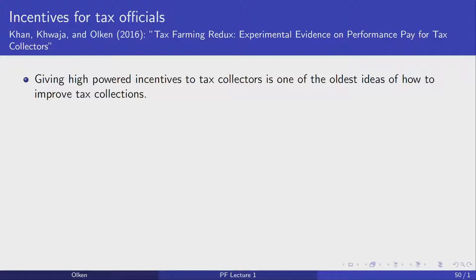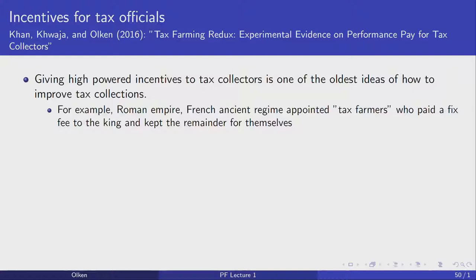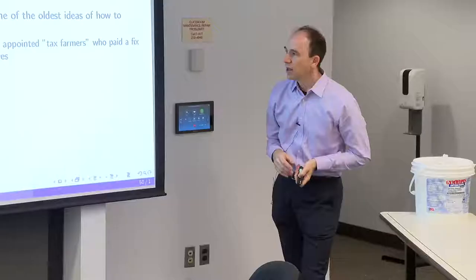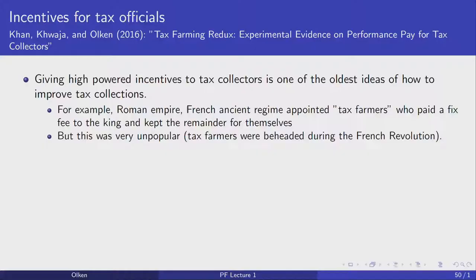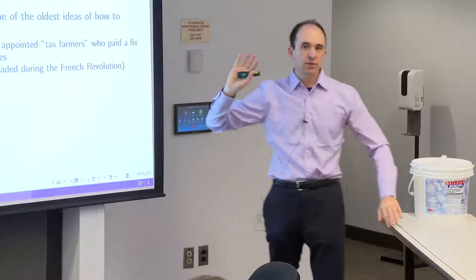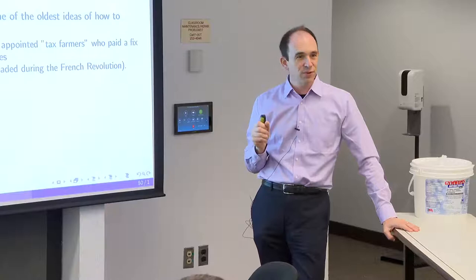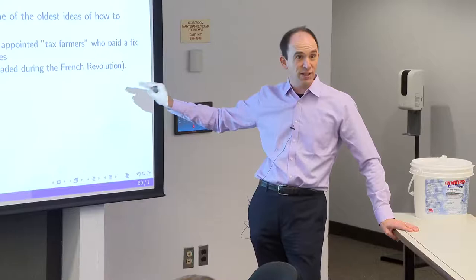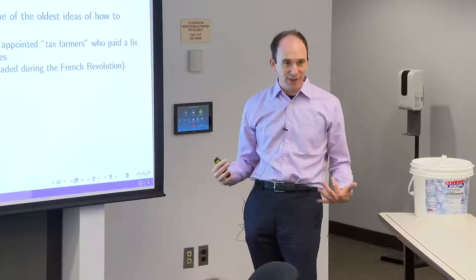In pre-revolution France, they had tax farmers who paid a fixed fee to the king and got to keep all the taxes on the margin — essentially a 100% incentive. This was very unpopular: the tax farmers were beheaded during the French Revolution because they were super zealous in collecting taxes. The Massachusetts Department of Revenue's Taxpayer Bill of Rights explicitly states they will not create any incentives or even informal targets for revenue for any tax staff.